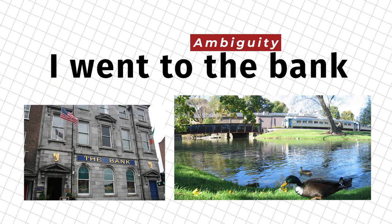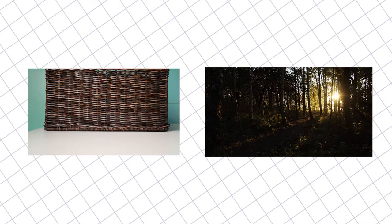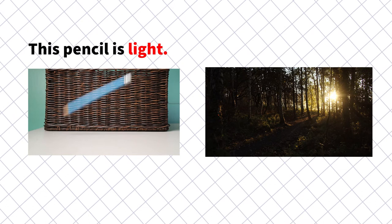The second condition is what I call the truth condition. This occurs when the propositions of the argument are true, but only when the meanings of the ambiguous expressions are held distinct. A simple example: if I said 'this pencil is light' and 'light has no weight,' you would only accept the truth of these propositions if you understood each instance of 'light' as having a distinct or different meaning.